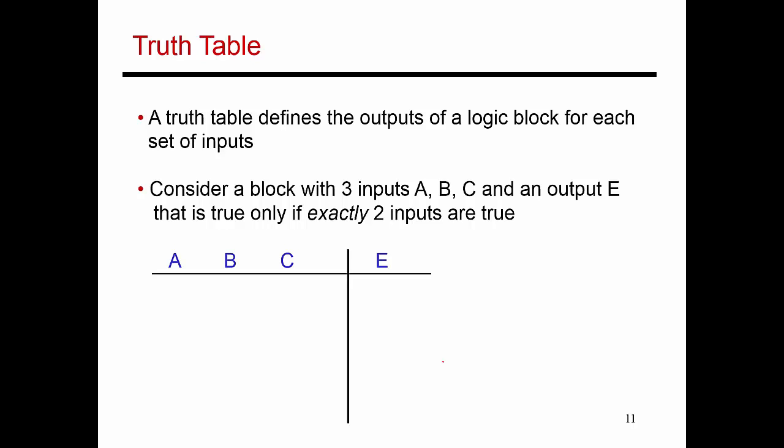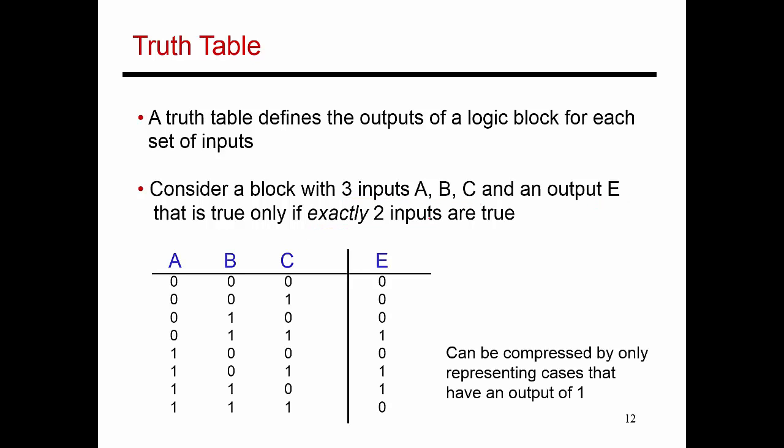The circuit is essentially going to indicate the particular set of inputs that lead to the outputs being high or low. If I am trying to describe a circuit which has three inputs A, B, and C, and an output E, which is true only if exactly two of the inputs are true, then my truth table is going to look like this.